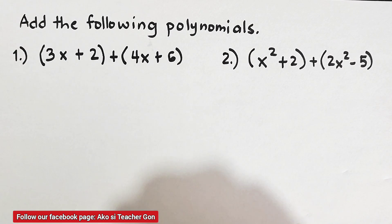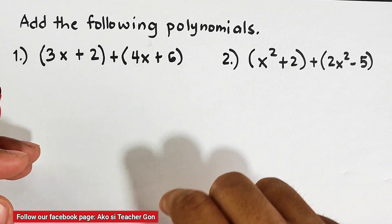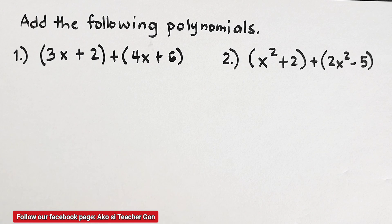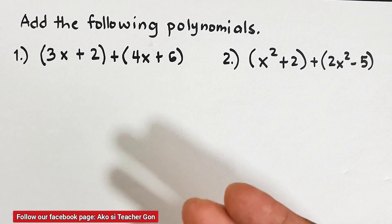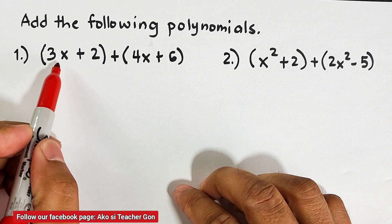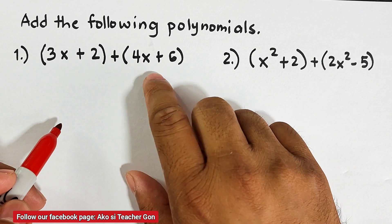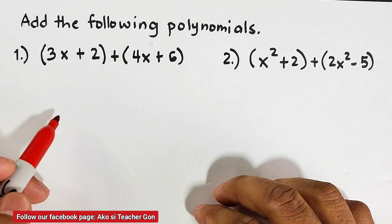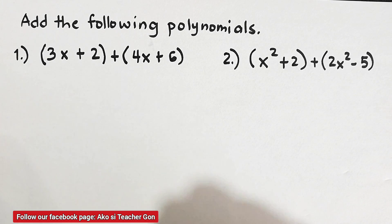Let's start with number one. In number one we are asked: (3x + 2) + (4x + 6). As you can see, we have two given polynomials. You might get confused and think that because we have parentheses we need to multiply — no. The parenthesis is just a grouping, where 3x + 2 is the first polynomial and 4x + 6 is another polynomial, and we have the addition operation.